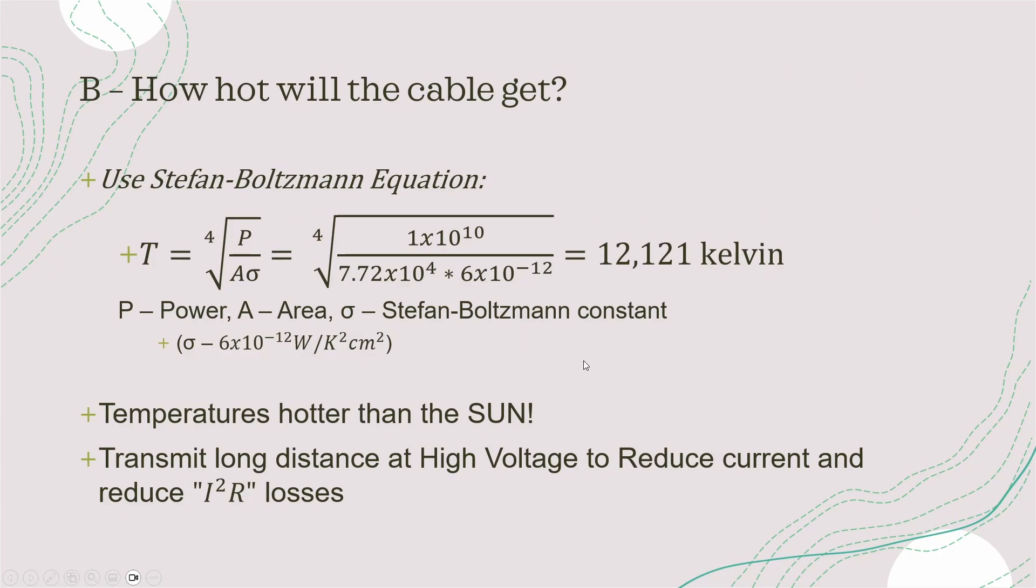The third part of the question is a little bit trickier. You gotta know the Stefan-Boltzmann equation which basically tells you the heat radiating out of an object with some constant in there. You basically need to know the area of the cable and the power dissipation. This has all been given to you in the question so we just plug in the numbers.